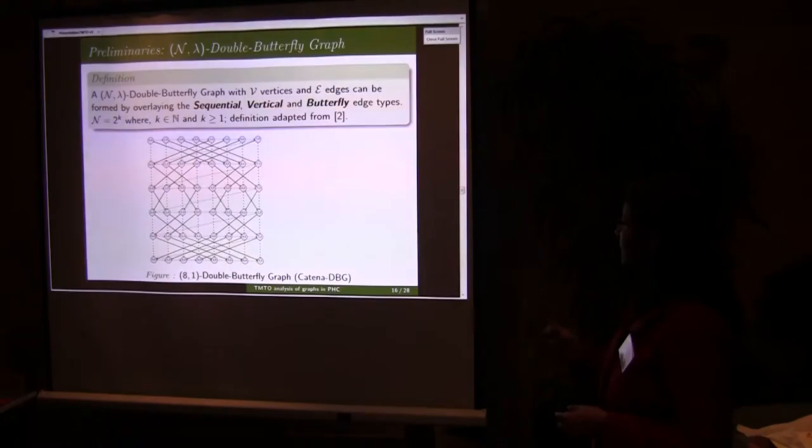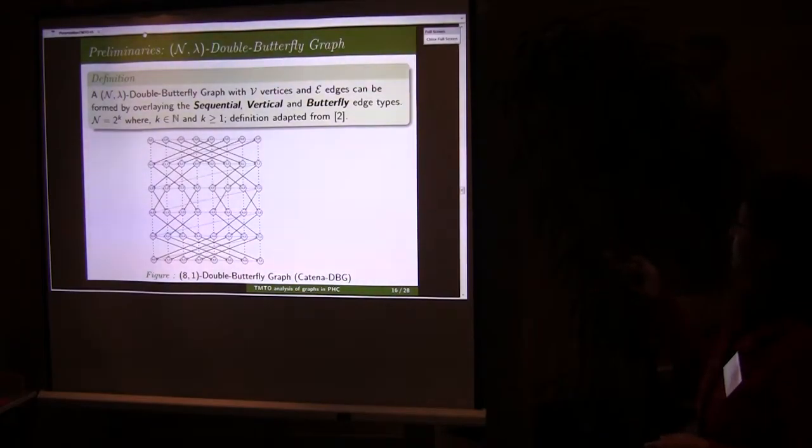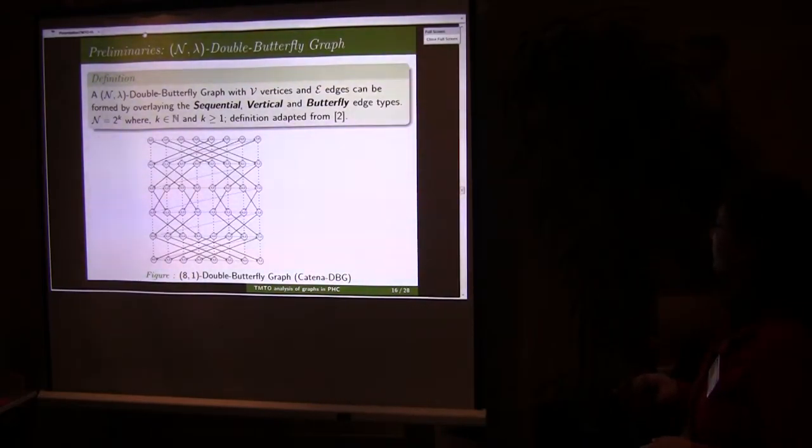This is butterfly graph. Catena and DTG can be explained with this graph. It is the combination of sequential, vertical and butterfly graph that I have already shown.